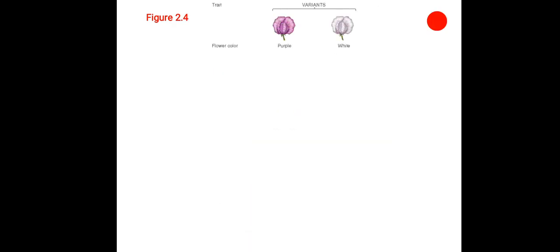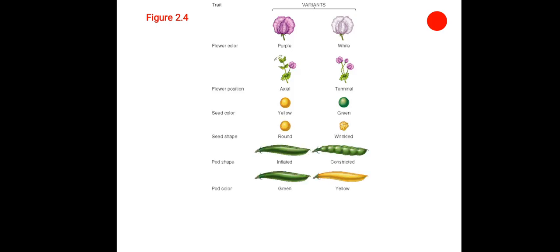Now, we shall be discussing about different variants. The total 7 variants Mendel had studied. First is flower color, that is purple and white. Flower position, axial terminal. Seed color, yellow-green. Seed shape, round-wrinkled. Pod shape, inflated-constricted. Pod color, green-yellow. And finally, the height, that is tall and dwarf.